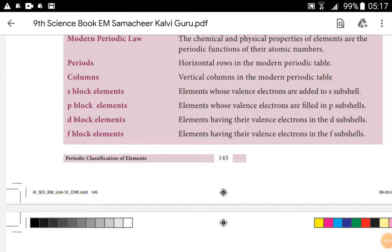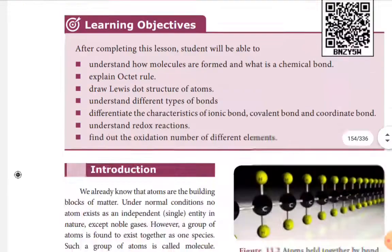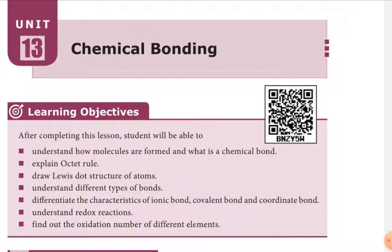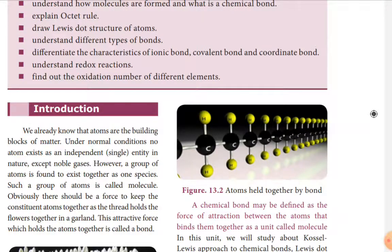For the students of the ninth standard, we are going to discuss Unit 13: Chemical Bonding. We have already started, and again we are going to revise it. You can refer to your science book, page number 148. In this lesson, we are going to learn how molecules are formed, what is the octet rule, the Lewis dot structure of atoms, and understanding the different types of bonds.